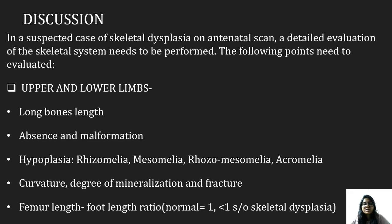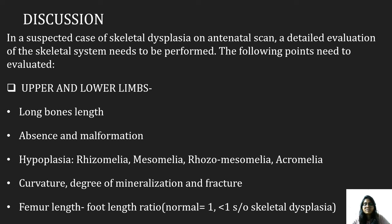In a suspected case of skeletal dysplasia on antenatal scan, a detailed evaluation of the skeletal system needs to be performed. In upper and lower limbs, the length of the long bones, absence, malformation, hypoplasia — which are rhizomelia, mesomelia, rhizo-mesomelia, acromelia — should be looked for. Curvature, degree, and mineralization of the bone and fractures should be assessed. Femur length and femur-to-foot length ratio should be normalized to 1; if it is less than 1, it is suggestive of skeletal dysplasia.